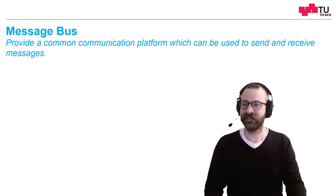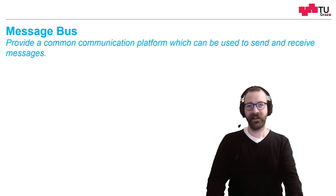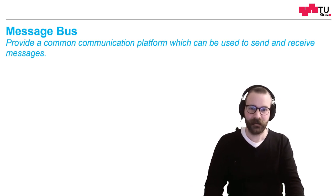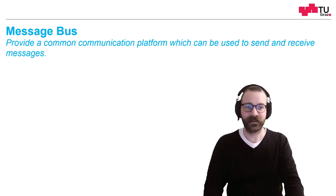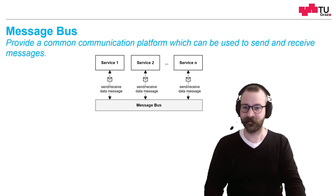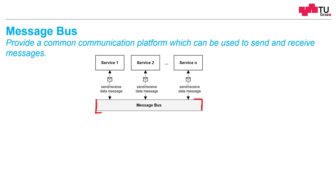Next is the message bus. The idea of the message bus is to provide a common communication platform which can be used to send and receive messages. We have a common communication platform between all components, and all components send their messages to the message bus. The message bus then does something with these messages, transfers it to the corresponding receiver which receives the message again. And this could go in both directions of course.